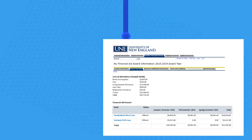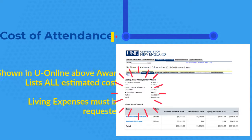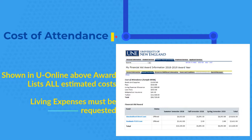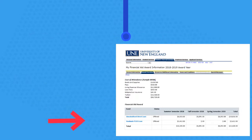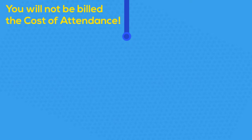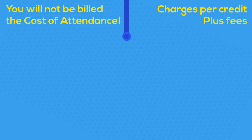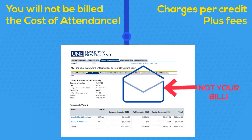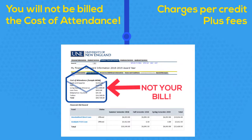Let's take a close look at the award overview section of UNLINE. The cost of attendance estimates costs you may want to budget for the year, and it is the maximum we can cover with financial aid. Your tuition charge will depend on the number of credits you are taking. You will not be billed the cost of attendance listed in UNLINE — the only charges you will see on your bill are for tuition and fees.